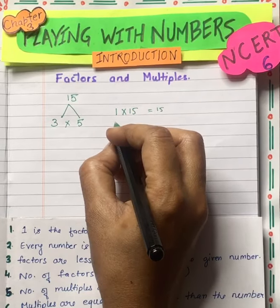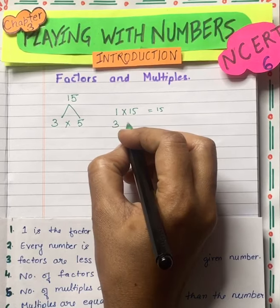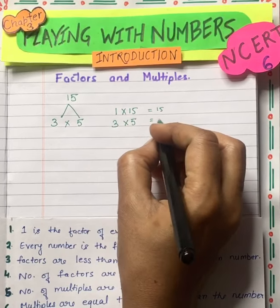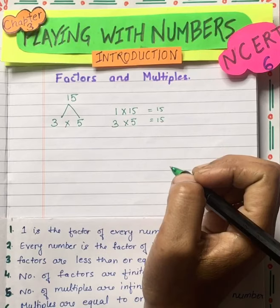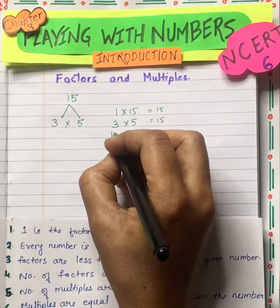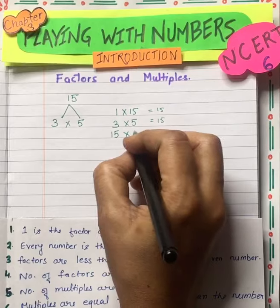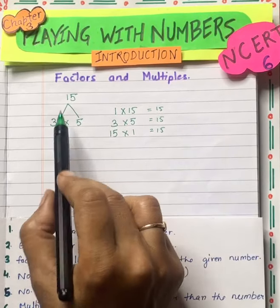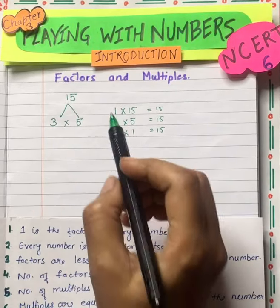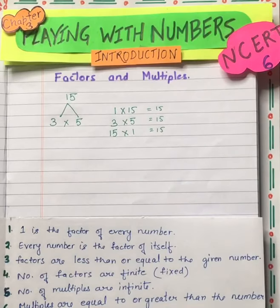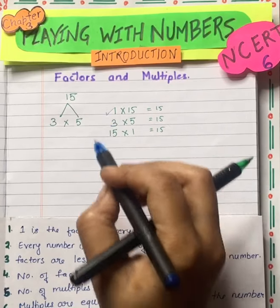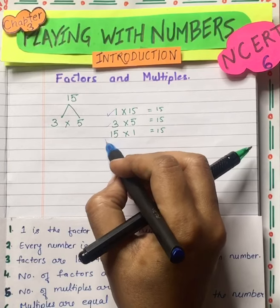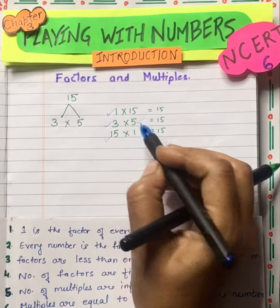Now, 2 into table? No. It will be 3 into 5, which is equal to 15. And 15 into 1, which is equal to 15. So 15 will be in 1's table, 3's table, and 5's table.